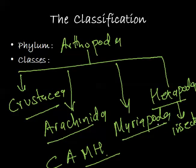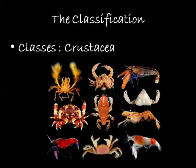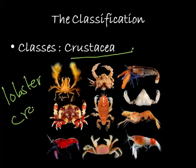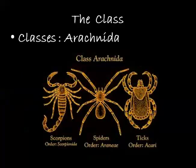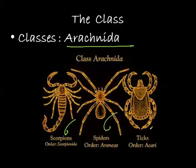We'll see examples under the different classes. In the case of Crustacea, we have examples like lobster and crab. These have a typical crust on the surface of the body — that's why they are defined as Crustacea. These insects are mostly found in a marine environment and protect their body with the help of this crust.